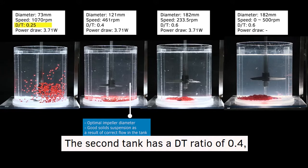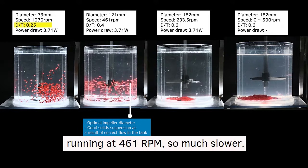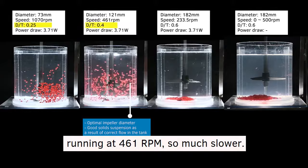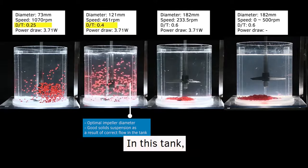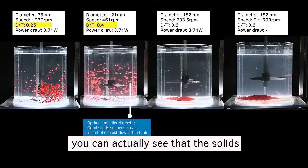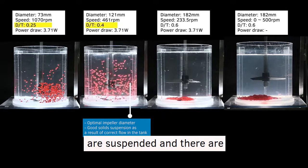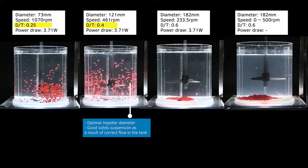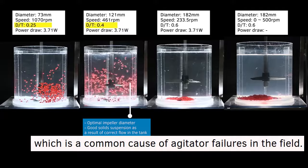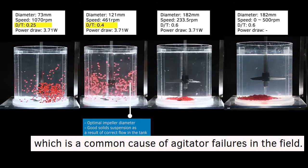The second tank has a dt ratio of 0.4, running at 461 rpm, so much slower. In this tank you can actually see that the solids are suspended and there are no solids settled on the bottom of the tank, which is a common cause of agitator failures in the field.